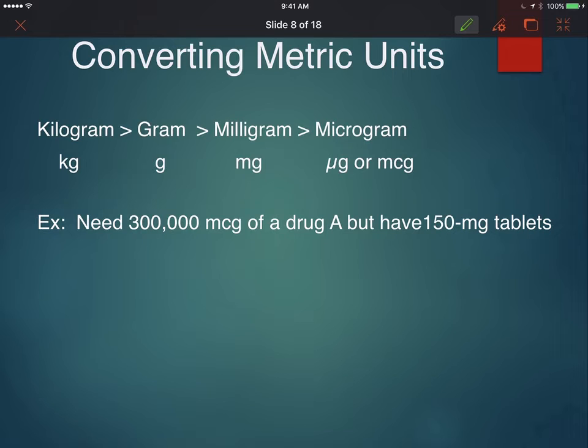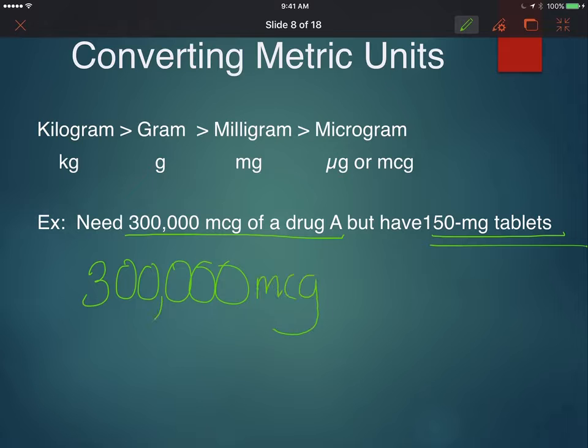Let's try one more just for practice. You can see if you need 300,000 micrograms of a drug, but you have 150 milligram tablets, you're going to have to get your units the same so you can work with this in a formula. So I'll convert 300,000 micrograms to milligrams.